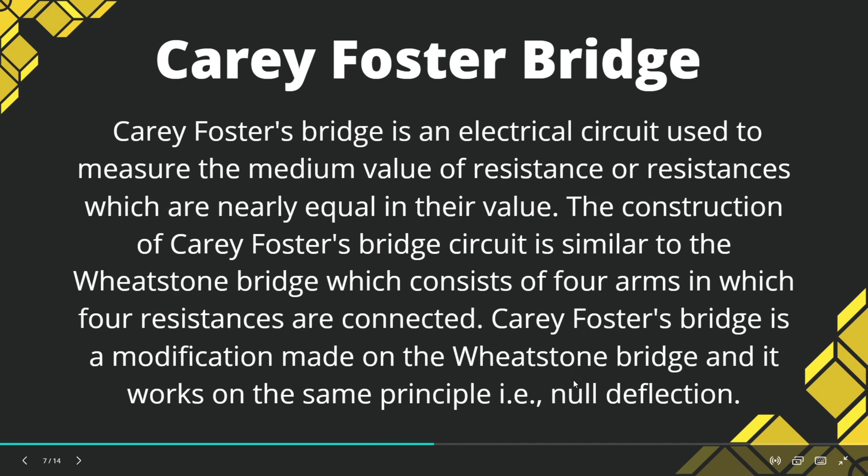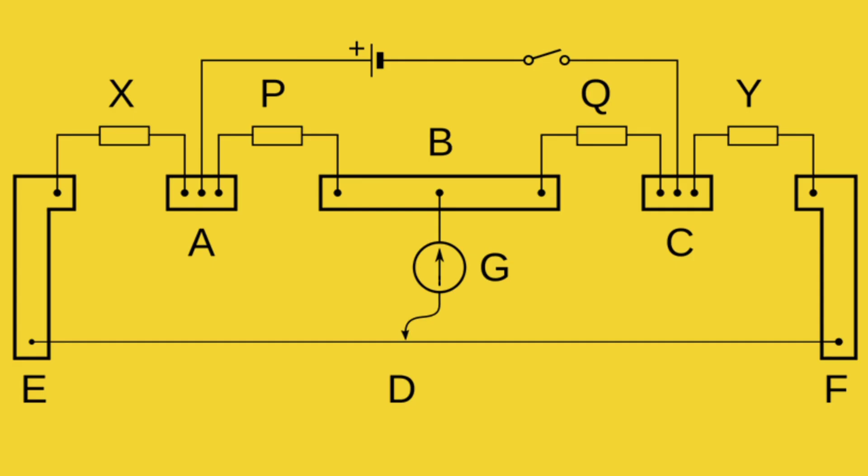The Kirchhoff's bridge is an electrical circuit used to measure the medium value of resistance or resistances which are nearly equal in their values. The construction of a Kirchhoff's bridge is similar to that of a Wheatstone bridge which consists of four arms in which four resistances are connected. Kirchhoff's bridge is a modification made on the Wheatstone bridge and it also works on the same principle which is Null Deflection.